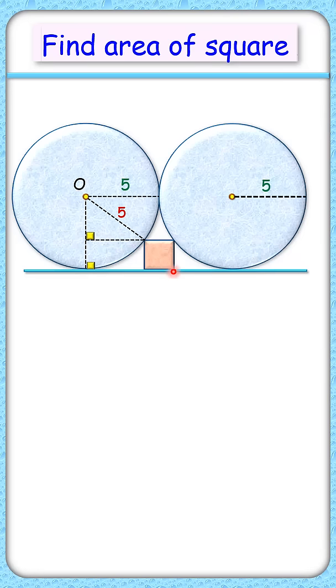Now let's assume the side of the square as x cm. Now let's find the dimensions of this triangle in terms of x.